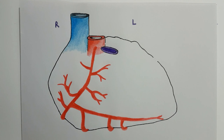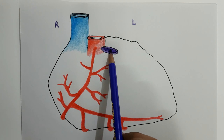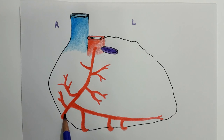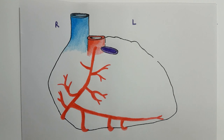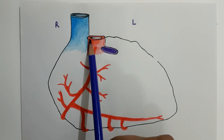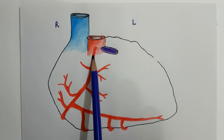In the diagram I have drawn of the sternocostal surface of the heart, you can see the pulmonary trunk, the ascending aorta, the superior vena cava, and the right coronary artery with its respective branches. The right coronary artery originates from the anterior aortic sinus of the ascending aorta.